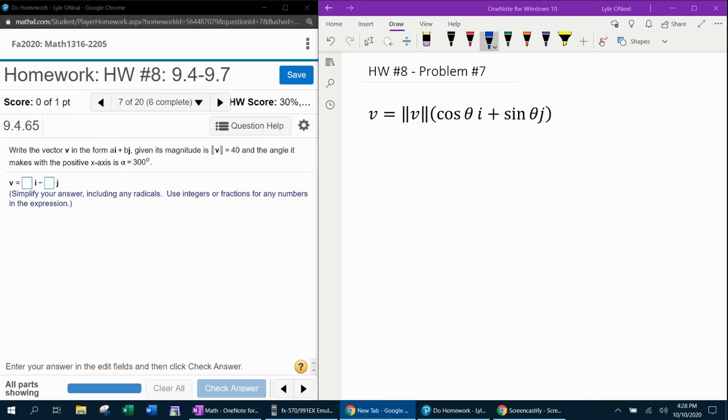All right, here we go. Question number seven from our 1316 homework number eight in MyLabMath. It says to write the vector V in the form A i plus B j, that standard form, given its magnitude is 40 and the angle it makes with the positive x-axis is 300 degrees.